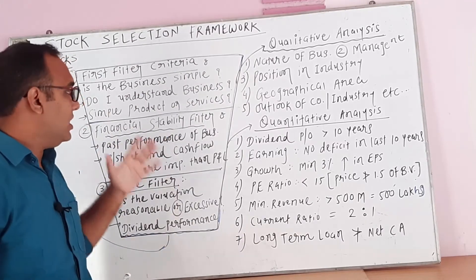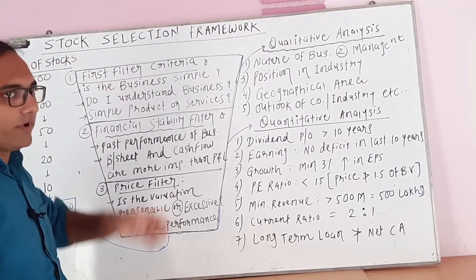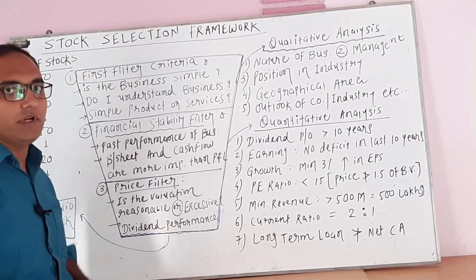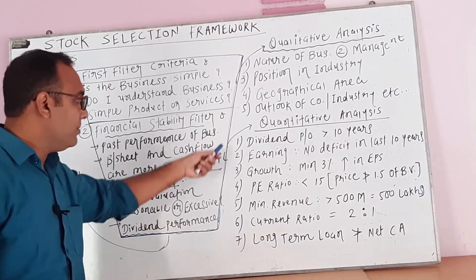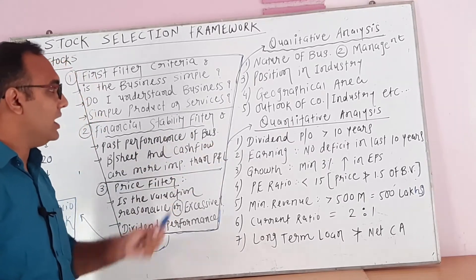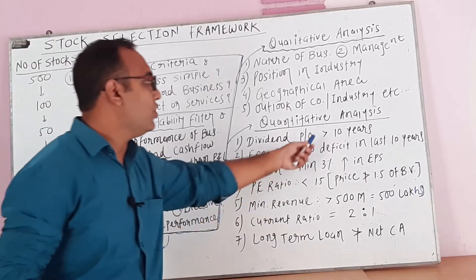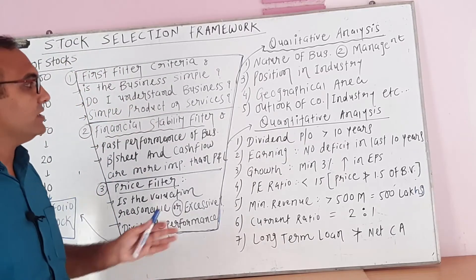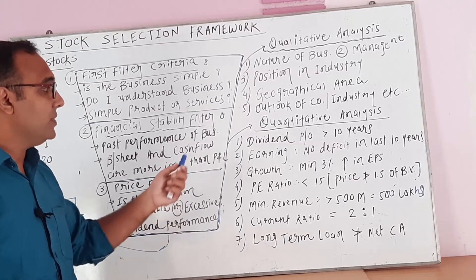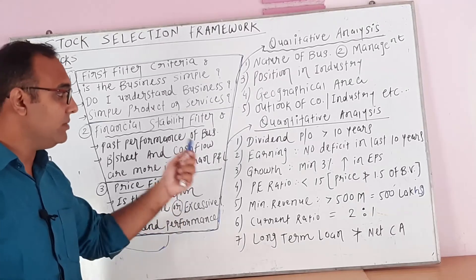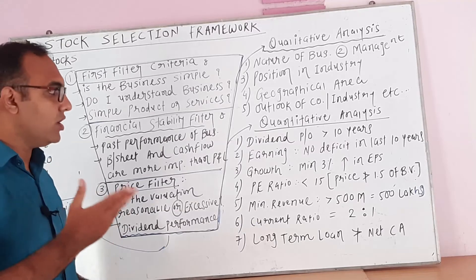The financial stability filter is a very important part of fundamental analysis and the stock selection framework. According to quantitative analysis, you must generally pass these seven questions. Number one, dividend payout — must be more than or equal to 10 years. Number two, earnings — there should be no deficit in the last 10 years. Number three, growth — a minimum 3% increase in EPS on a quarter-to-quarter or year-on-year basis.